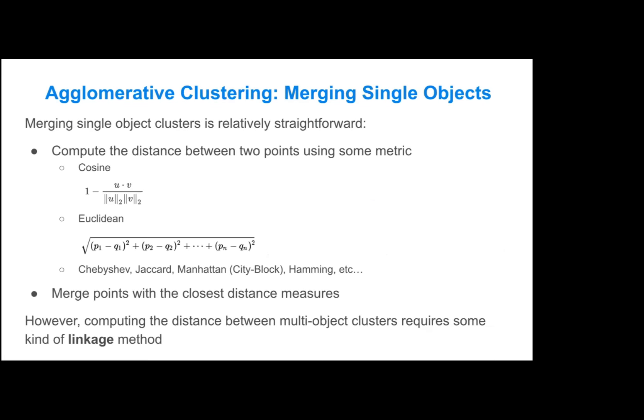For agglomerative clustering, when you're starting with merging single object clusters, this can be relatively straightforward. You will need some sort of distance metric. Cosine or Euclidean are the most commonly used metrics, but there's also a lot of other metrics depending on your specific use case, such as the Chebyshev, the Jacquard, the Manhattan or city block, or Hamming metrics. You'll compute the distance between each of the points, and then you'll merge pairs of points that have the closest distance measures.